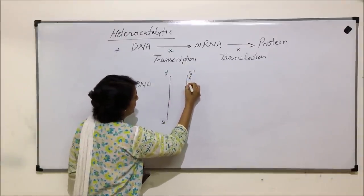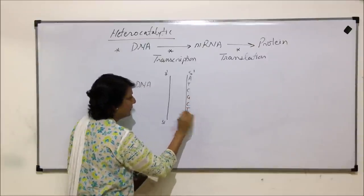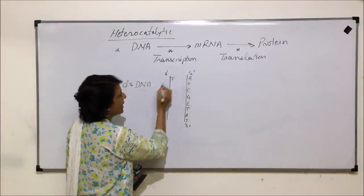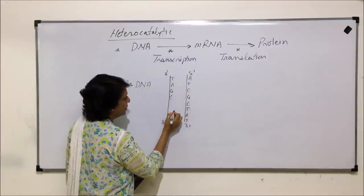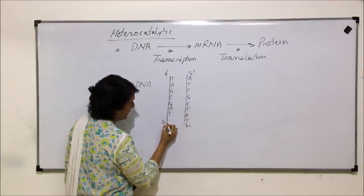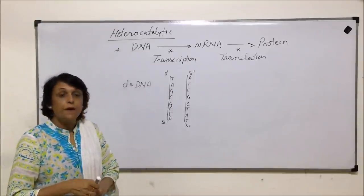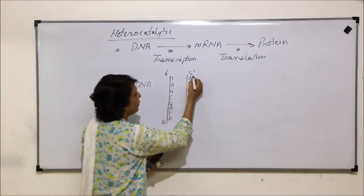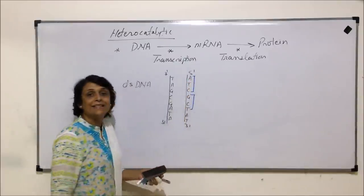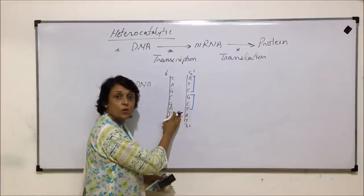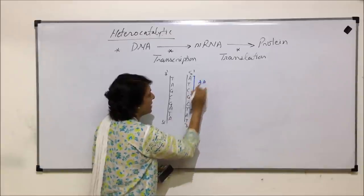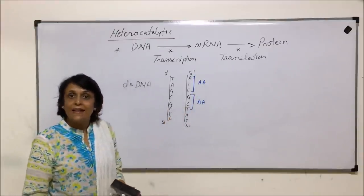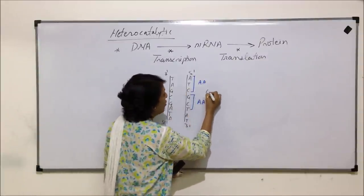Say the sequence on one strand is A-T-C-G-G-C-T-A-T. The sequence on the complementary strand follows base pairing rules: A pairs with T, T with A, C with G, G with C. If we want the codes on a DNA strand to be transcribed — codes are read in triplets — if I need this code for protein synthesis, where each triplet codes for an amino acid, then this strand becomes my coding strand.